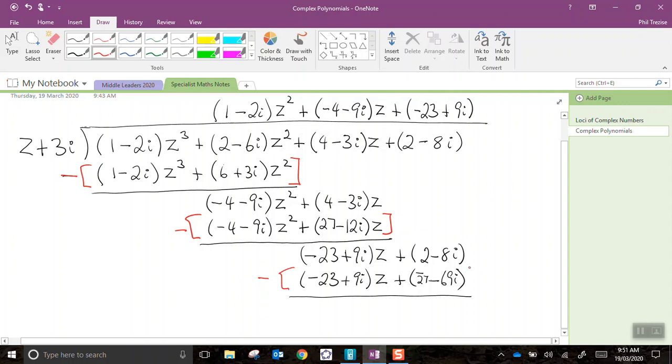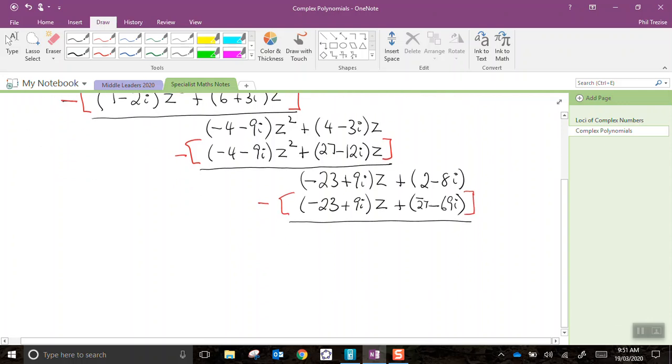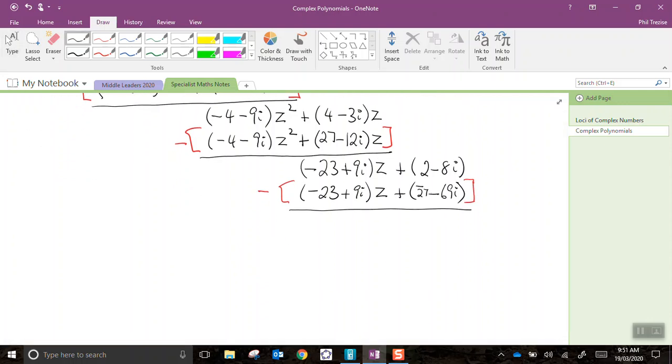Subtract all of this. The first parts are identical. 2 subtract negative 27 is the same as 2 add, that's 29. Now, subtract negative 69 is the same as positive 69, take away 8, is plus 61i. That's the remainder.